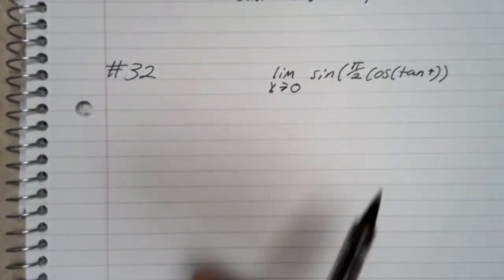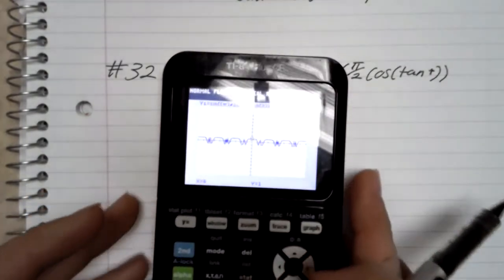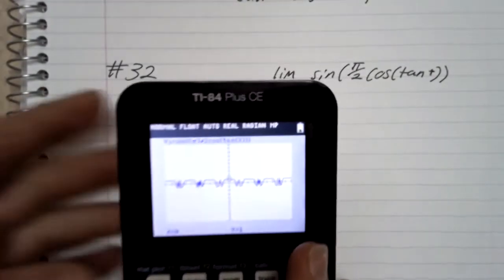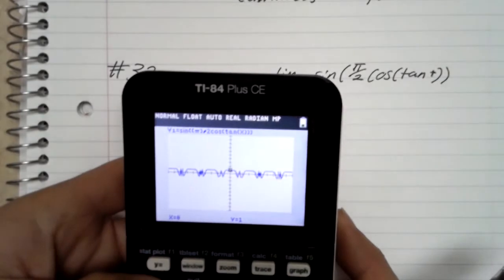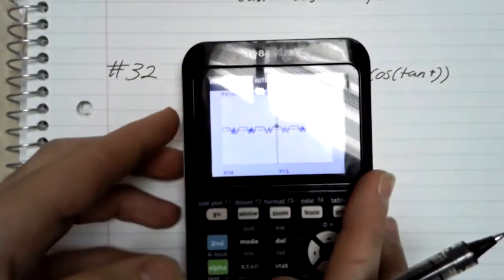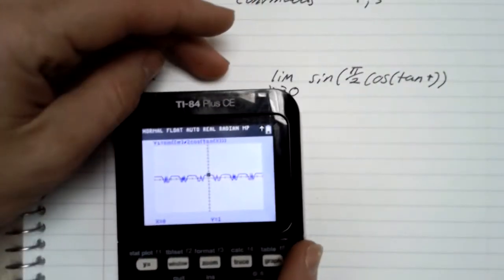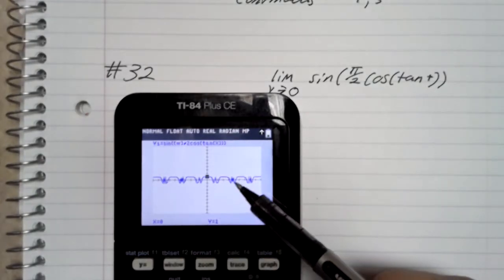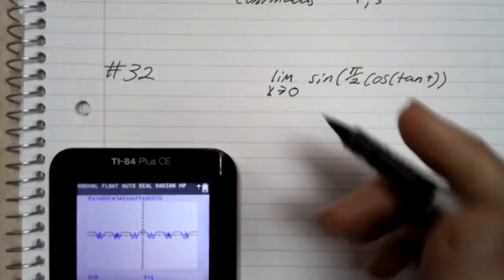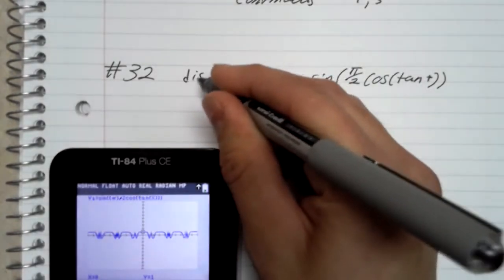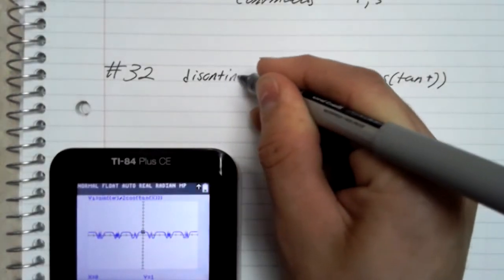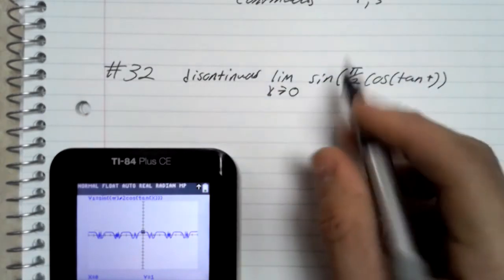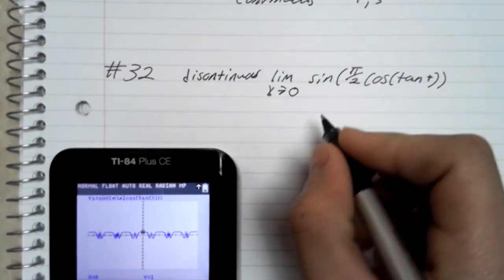For this one I used my calculator, which at about negative eight and eight there are jumps in it. For that I put it was discontinuous, and then my limit I got to equal one.